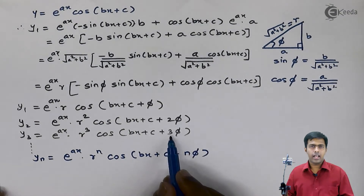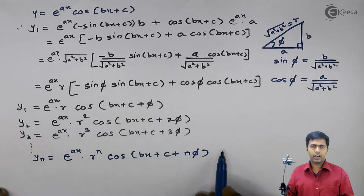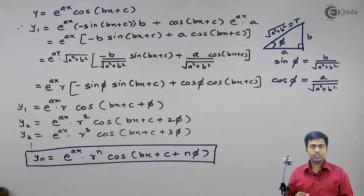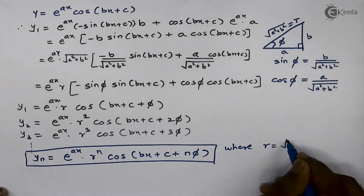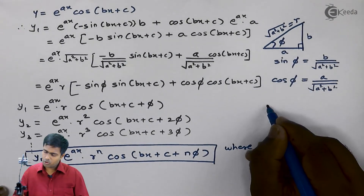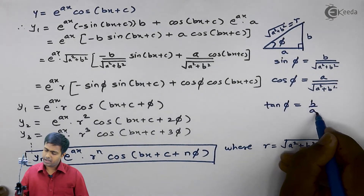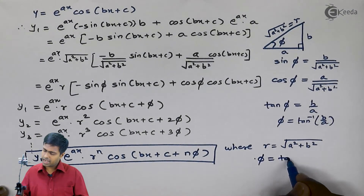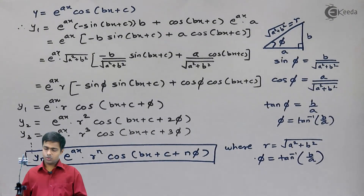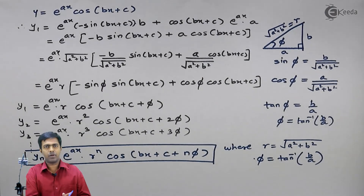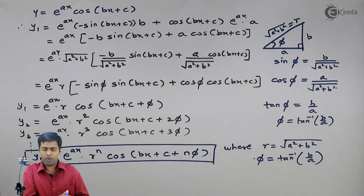This is the formula for the nth derivative of e raised to ax cos of bx plus c, where r equals root of a squared plus b squared, and phi equals tan inverse of b by a — since sin phi over cos phi gives tan phi equals b over a. This formula will be used to solve many problems. Thank you.